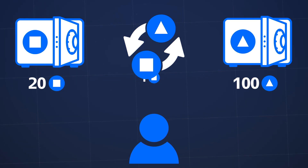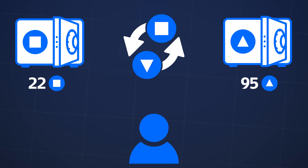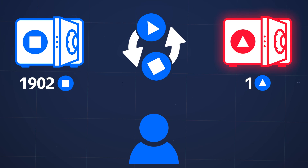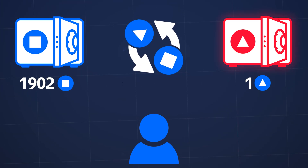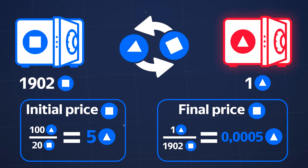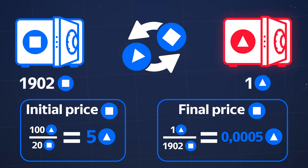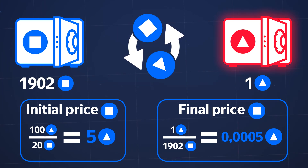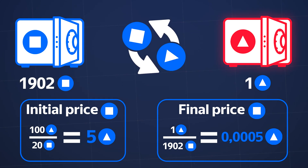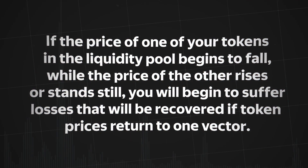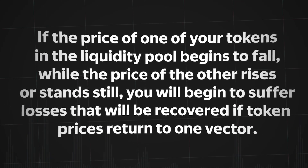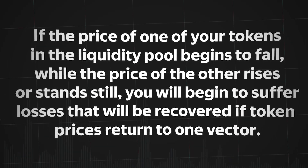But what happens to the liquidity pool if users start making many one-way exchanges — that is, massively withdrawing one token from the pool and not the other? The price of the asset with a growing quantity in storage will begin to fall steadily and may reach critical values. This is called an impermanent loss. In our example, the sale of just 1,882 tokens resulted in a 99% price change. As a result of an impermanent loss, liquidity providers may be left with a large number of tokens for which there is no demand. If the price of one of your tokens in the liquidity pool begins to fall while the price of the other rises or stands still, you will begin to suffer losses that will be recovered if the token price returns to its original vector.